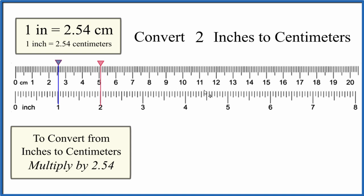So for two inches, we multiply our two inches times 2.54, and that's centimeters per inch. Inches will cancel out. That leaves us with centimeters. So two inches is equal to 5.08 centimeters.